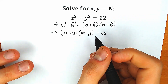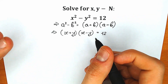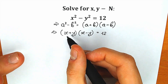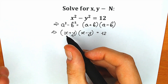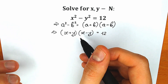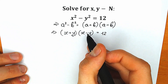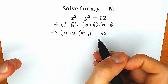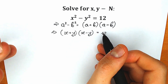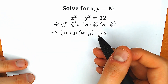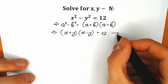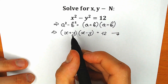Let's look closely at this question from another perspective. We have x plus y and x minus y — these are each a constant. We need to review all combinations because we have 12 here, which is not a huge number. So 12 can be written as a product of two constants.